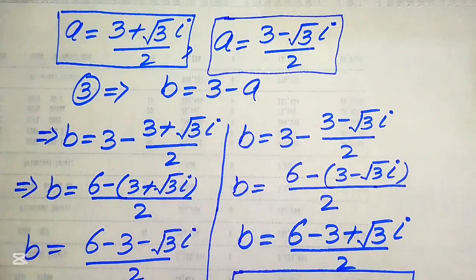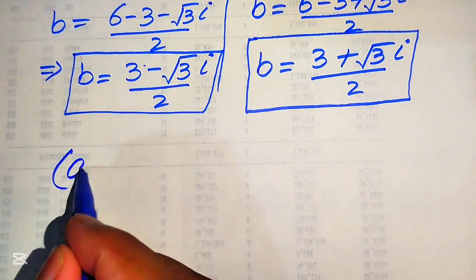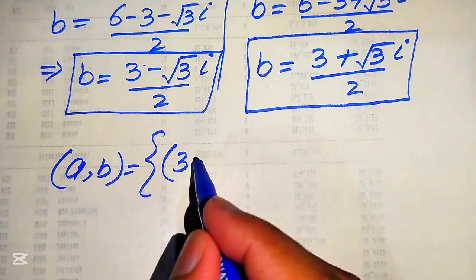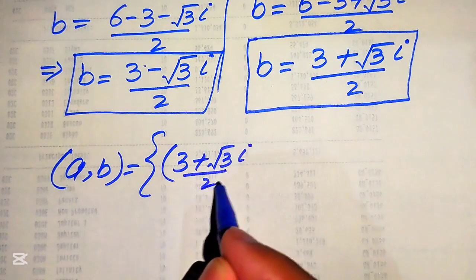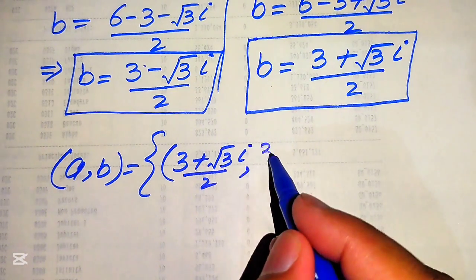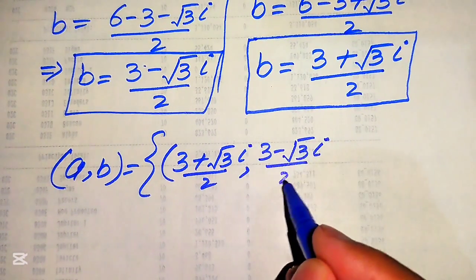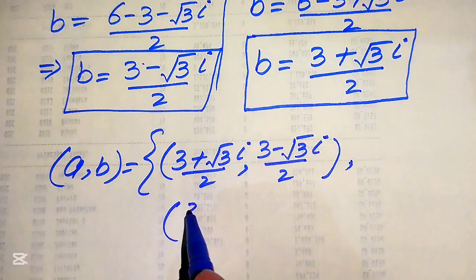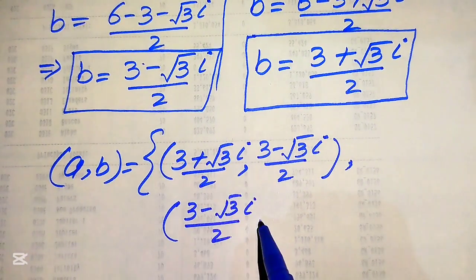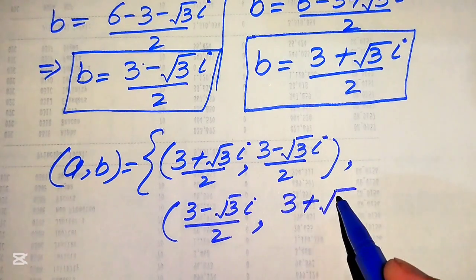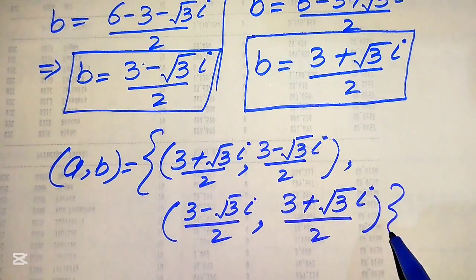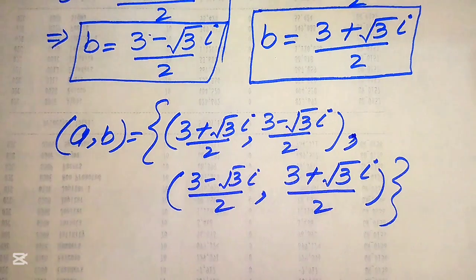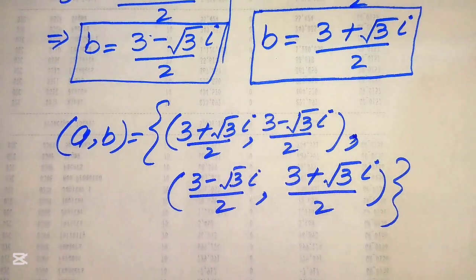Finally, the two solution pairs are: first root — A equals 3 plus square root of 3 iota over 2 and B equals 3 minus square root of 3 iota over 2; second root — A equals 3 minus square root of 3 iota over 2 and B equals 3 plus square root of 3 iota over 2. These are the two solutions of the given equation. Thank you for watching — please subscribe to my channel for more exciting videos.